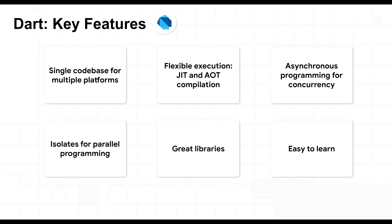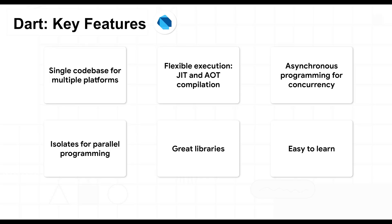Dart has both those options. You can use asynchronous programming, which is great for concurrency. And for parallelism, you can spin up something called an isolate, which explicitly dedicates a thread to run whatever task you want. Dart also has awesome core libraries — pretty much everything you need from a modern library: file IO, math, HTML, encoding and decoding, and more. A lot of options there.